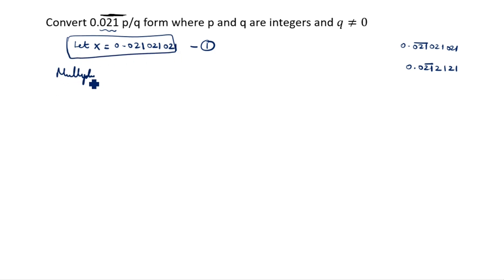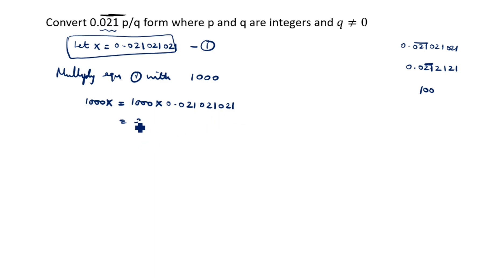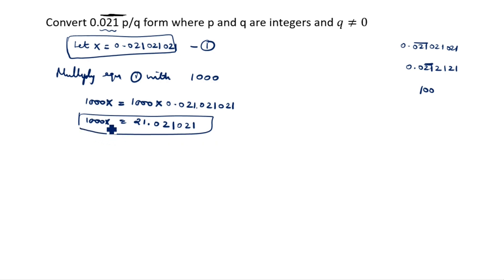Multiply equation one by 1000 — because there are three digits under the bar, we take three zeros, so we multiply by 1000. If it were a two-digit bar, we would take only two zeros and multiply by 100. So 1000x equals 1000 into 0.021021021..., which gives us 21.021021021... This is equation two.